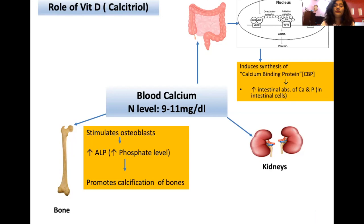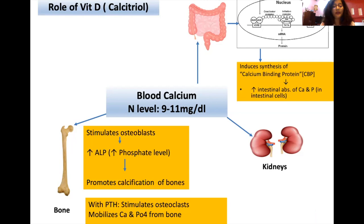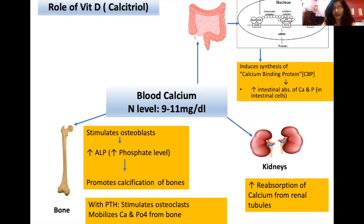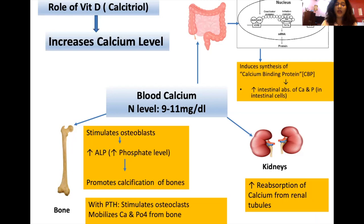Vitamin D also acts in response to parathyroid hormone — PTH stimulates vitamin D secretion. Together, vitamin D and PTH stimulate osteoclasts, which mobilize calcium and phosphorus from bone. In the kidney, active calcitriol is formed and increases reabsorption of calcium from renal tubules. The overall effect of vitamin D is to increase calcium levels in the blood.